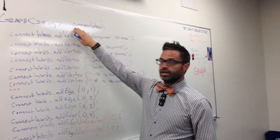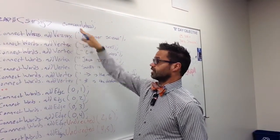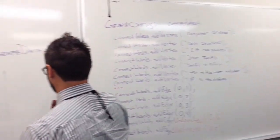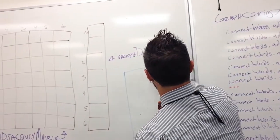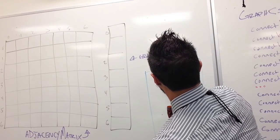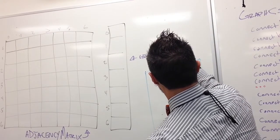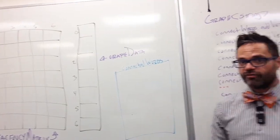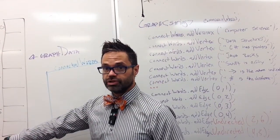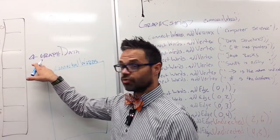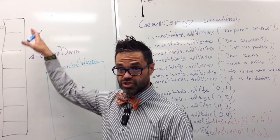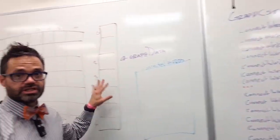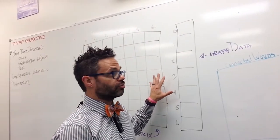The first thing we're going to do is create a graph of type string called connect word. Here we have a graph of string called connect word. With that graph of string, we have a Boolean 2D array as well as a graph data array — this is going to hold strings. These two data components come with this structure.